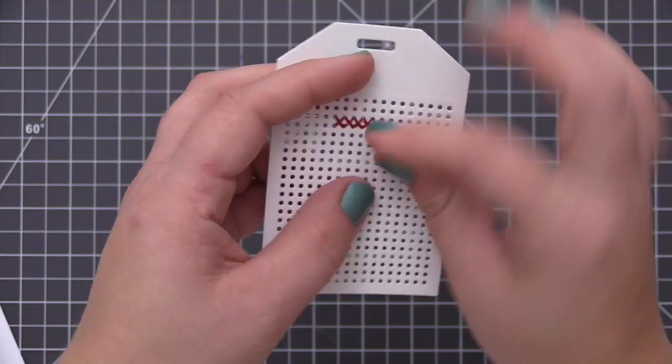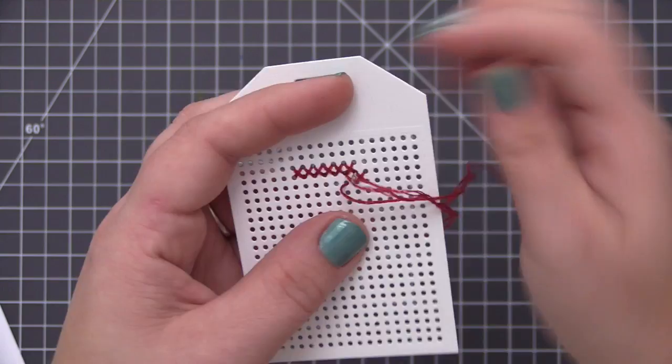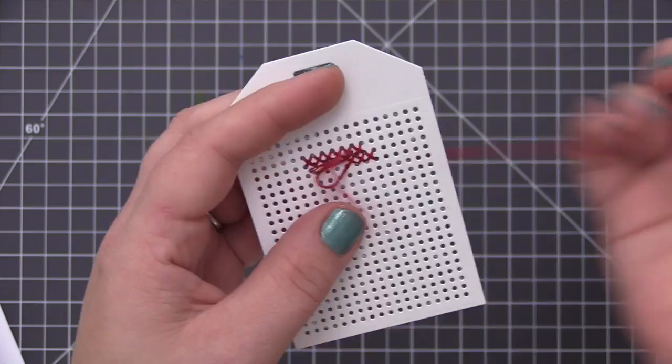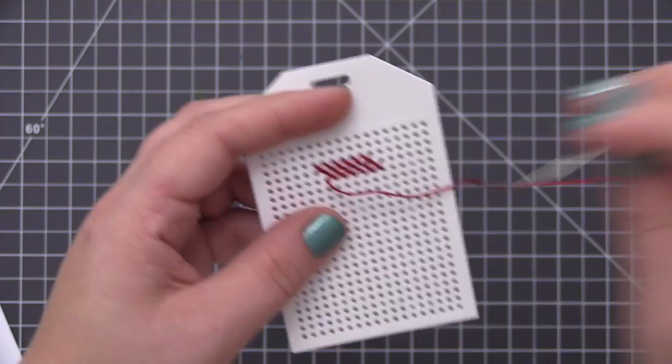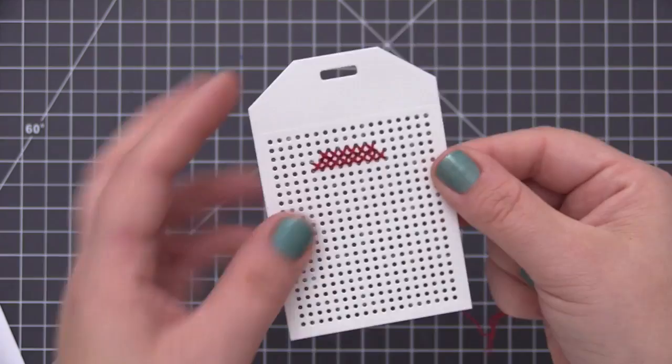Definitely have fun with the different patterns, especially if you create your own or if you are using the downloadable ones that we have here. You can definitely change them up and make them your own. You don't have to use white cardstock for the tag, so you can change that to whatever you want. Like I mentioned before, the craft tags look really pretty with white stitching or red stitching. You can mix up your thread and do different colors. It's completely up to you how you want to do this.